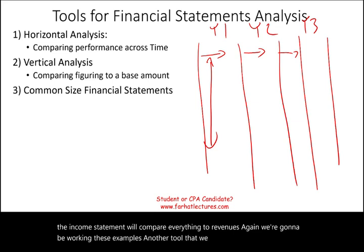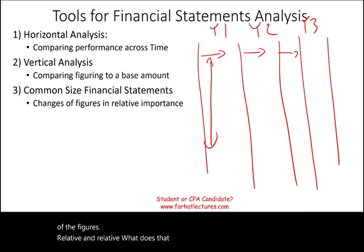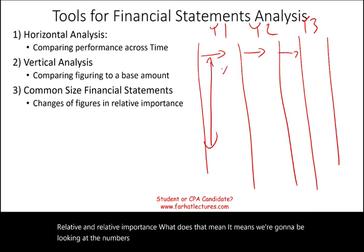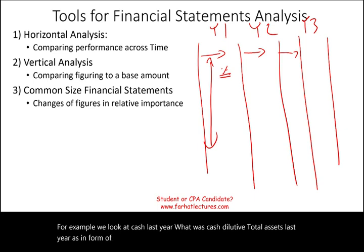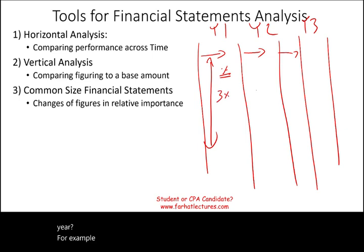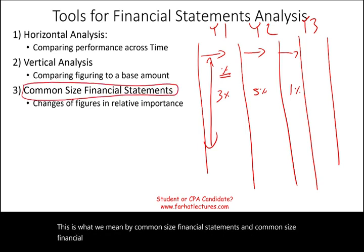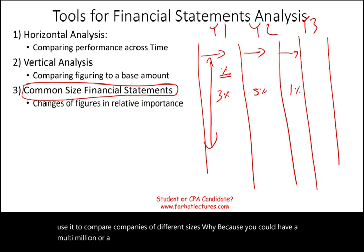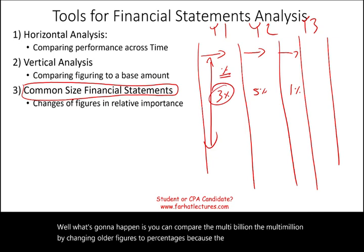Another tool is called common size financial statements. What is that? It's changing the figures to reflect their relative importance — we're going to be looking at the numbers, but all as a percentage. For example, what was cash relative to total assets last year as a percentage? Maybe last year it was 3%, this year 5%. The beauty of common size financial statements is you can use them to compare companies of different sizes — a multi-billion dollar company to a multi-million dollar company — because converting to percentages factors the size out.